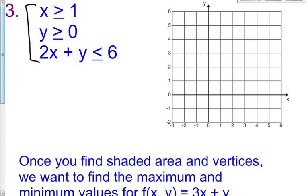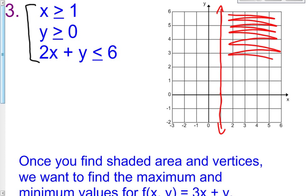The first inequality is x is greater than or equal to 1. An x equals line is a vertical line, so x equals 1 is completely vertical at 1. If we know x is greater than or equal to 1, it's everything to the right of 1. So I'm going to shade everything to the right of 1.